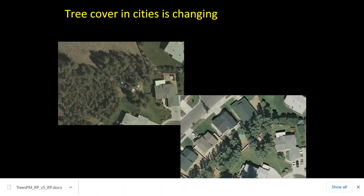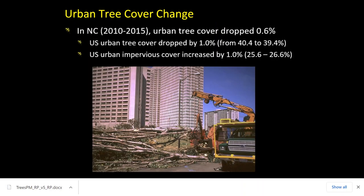How has tree cover been changing in North Carolina? Unfortunately, like most of the country, tree cover is dropping. In North Carolina, urban tree cover dropped by 0.6% between 2010 and 2015. Across the United States, urban tree cover dropped by 1% in the same period. At the same time, impervious cover increased by 1%. This near-universal trend of tree cover going down and impervious cover going up is critically important for heat analysis.